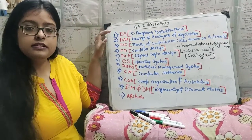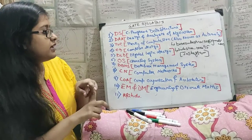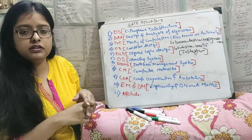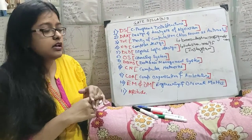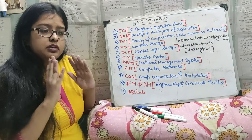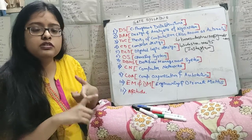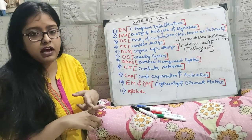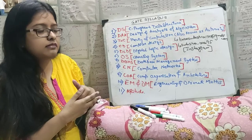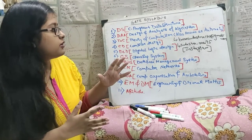First is Data Structure — DS. It is actually two subjects: C programming and Data Structure, covered in two semesters. Both are important. C programming is like, you have to be confident about at least one programming language. Let's pick C because it is included in GATE syllabus also. And Data Structure is very, very important.